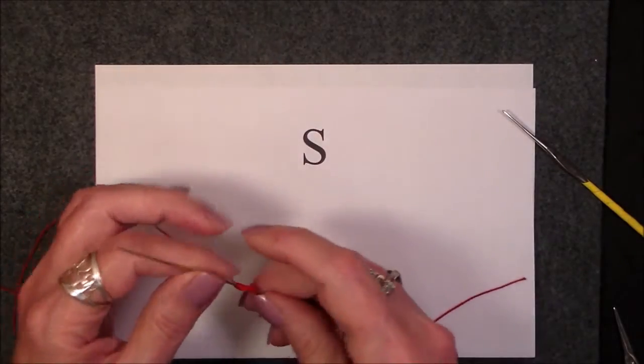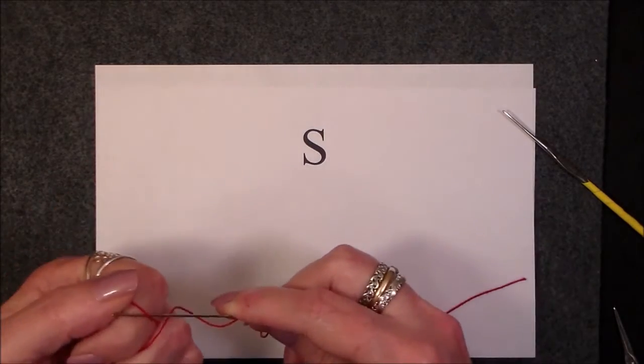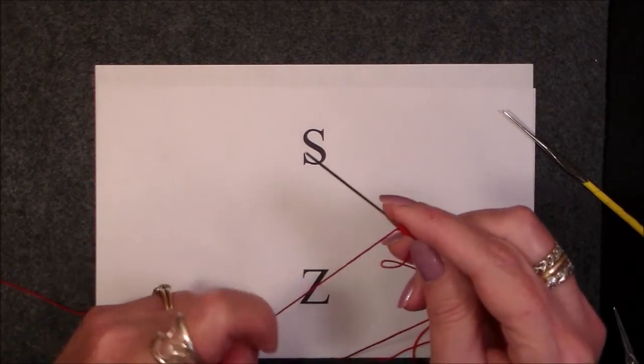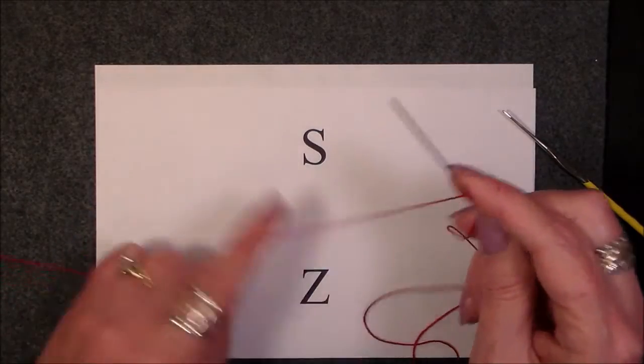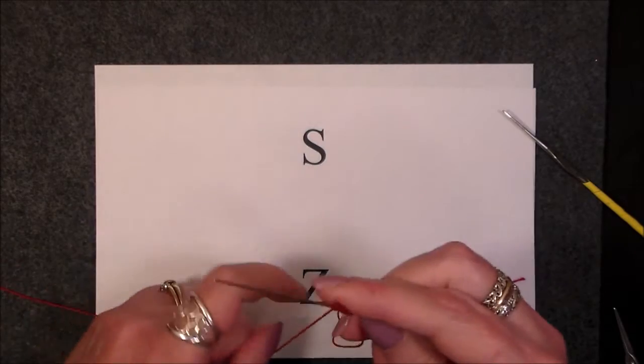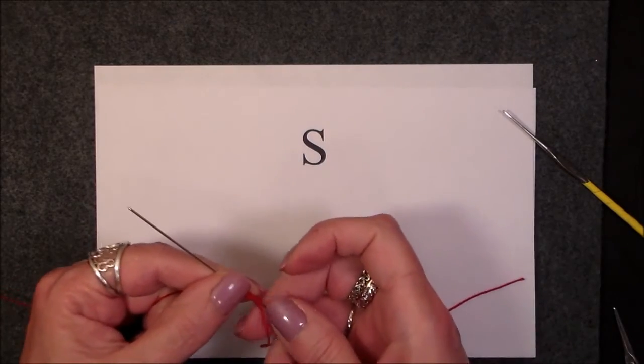Now, we're going to put in a double stitch, complete double stitch. Well, I just added another one to that chain. Let's put in our double stitch. One. Alright, we've got our complete double stitch in.